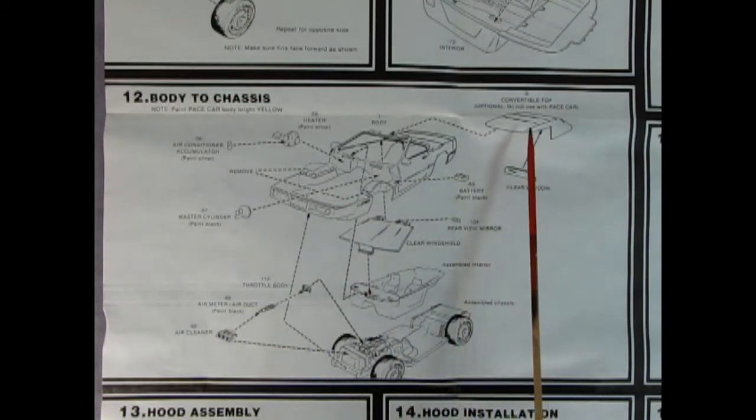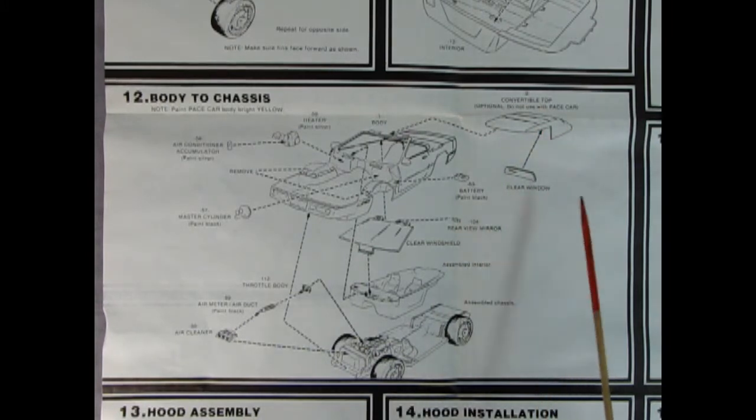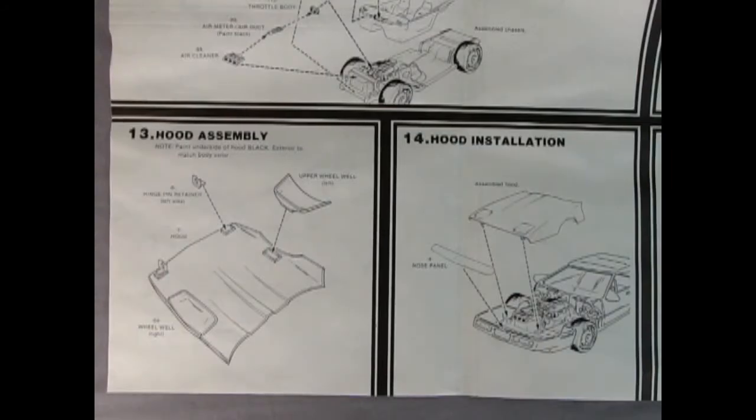There's our convertible top, it says optional, do not use with pace car. There's the clear window, the battery. You do get a clear windshield here and the rear view mirror. Then we've got our interior assembly, master cylinder going in place, and once this all clicks down you can put the throttle body, the air meter, and the air cleaner all together and just finish up your Corvette. Now we can't go driving around without a hood on this car because it looks really ridiculous. Here we have our hood assembly. It says to paint the underside of the hood black, exterior to match the body color. We got a hinge pin retainer which goes on there and then the upper wheel wells which will glue into place.